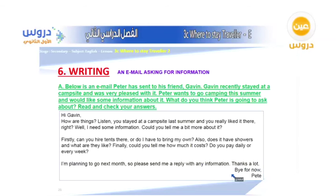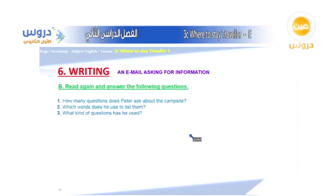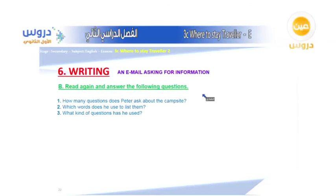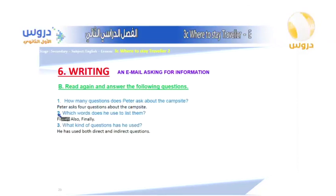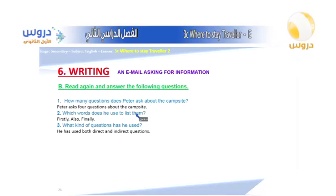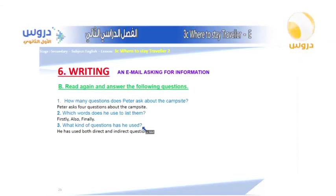Questions about the email: how many questions does Peter ask about the campsite? Peter asked four questions. Which words does he use to list them? He uses firstly, also, and finally. What kind of questions has he used? He has used both direct and indirect questions.